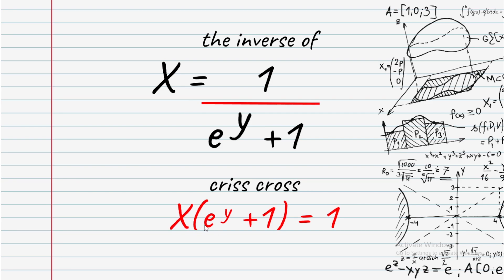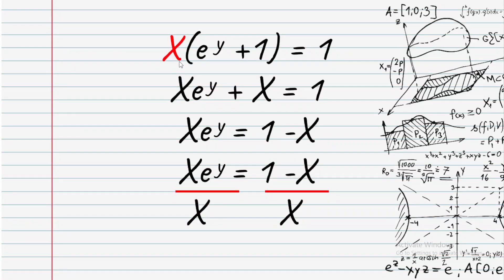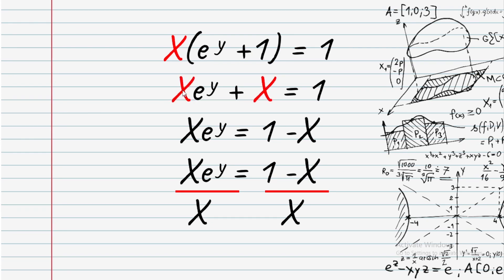Expand: x times e to the power of y plus x equals 1. Then x times e to the power of y equals 1 minus x. Divide both sides to isolate e to the power of y.